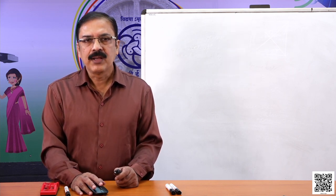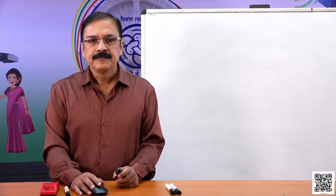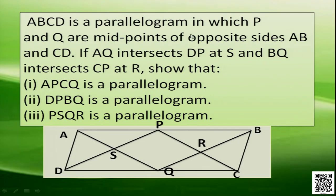By using this property, we can solve many problems. Consider the question: ABCD is a parallelogram in which P is the midpoint of AB and Q is the midpoint of CD. If AC and BD intersect each other at R, then we have to show that APCQ is a parallelogram.